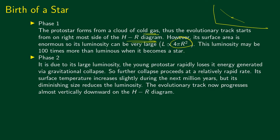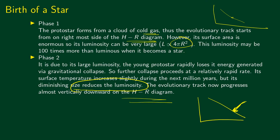In phase 2, due to its large luminosity, the young protostar rapidly loses the energy generated by gravitational collapse, and further collapse proceeds at a relatively rapid rate. Its surface temperature increases slightly during the next million years, but its diminishing size reduces its luminosity. The evolutionary track progresses almost vertically downward on the HR diagram.